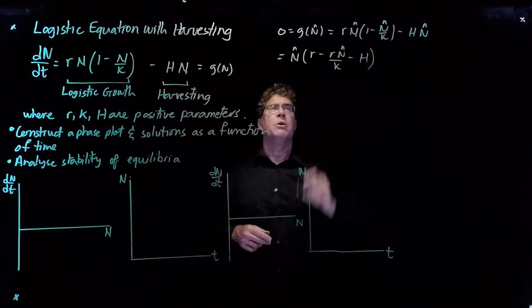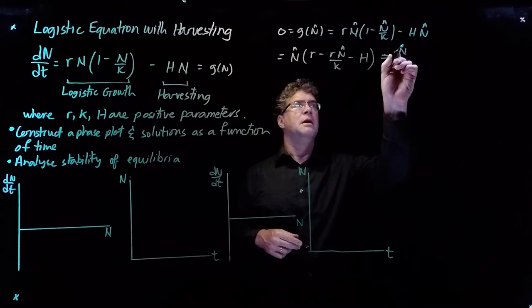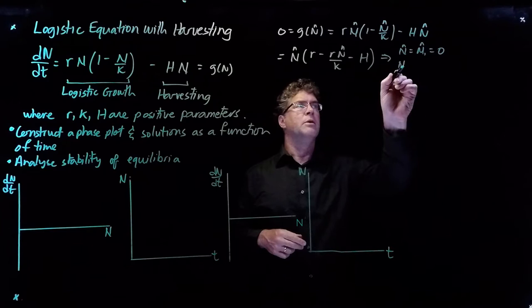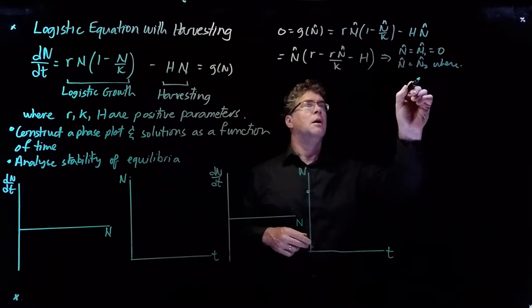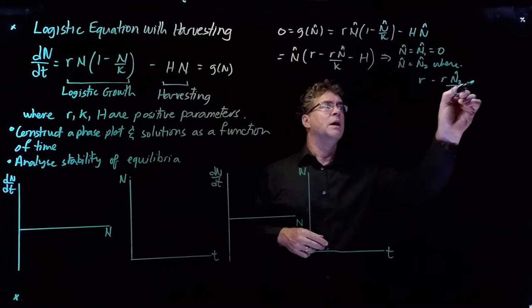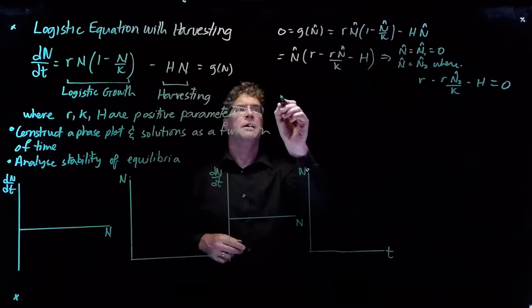If this quantity is zero, then either n-hat equals zero, or the quantity in brackets equals zero. So the first possibility is n-hat equals n1-hat, which is zero. The other is n-hat equals n2-hat, where r minus r·n2-hat over K minus h equals zero.